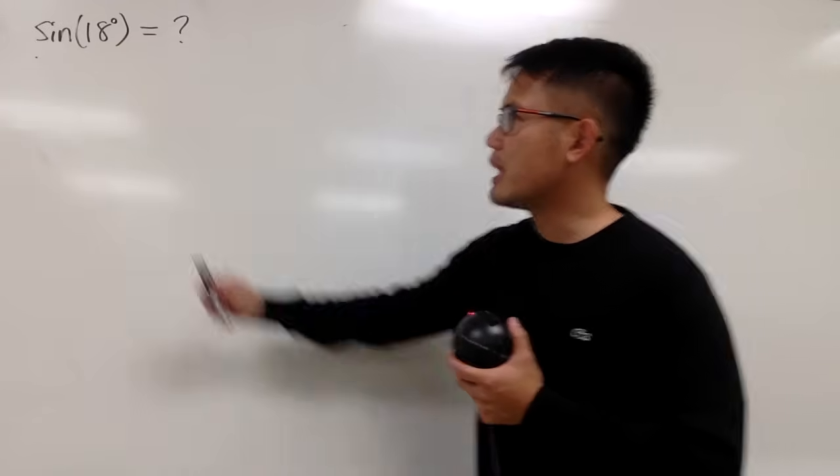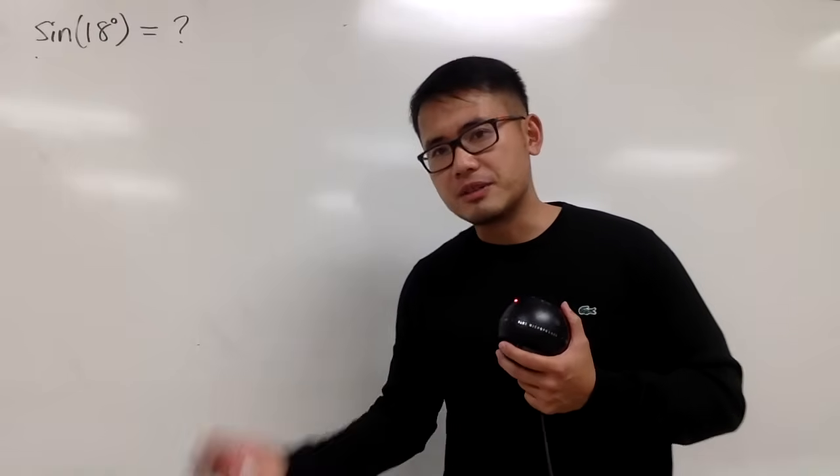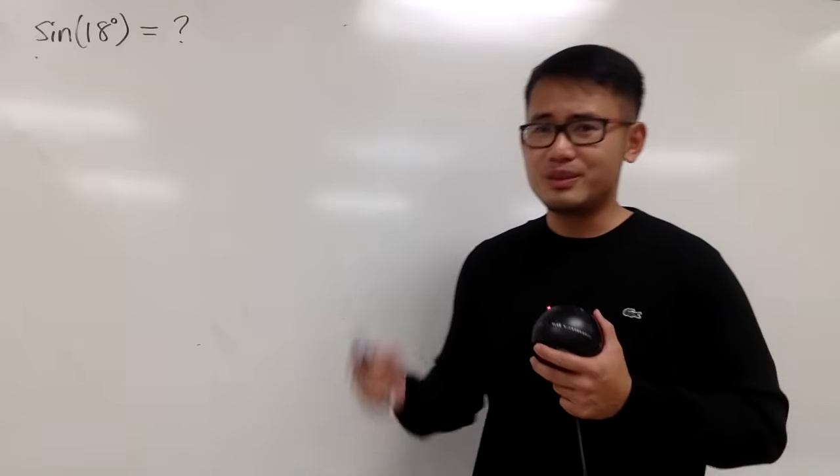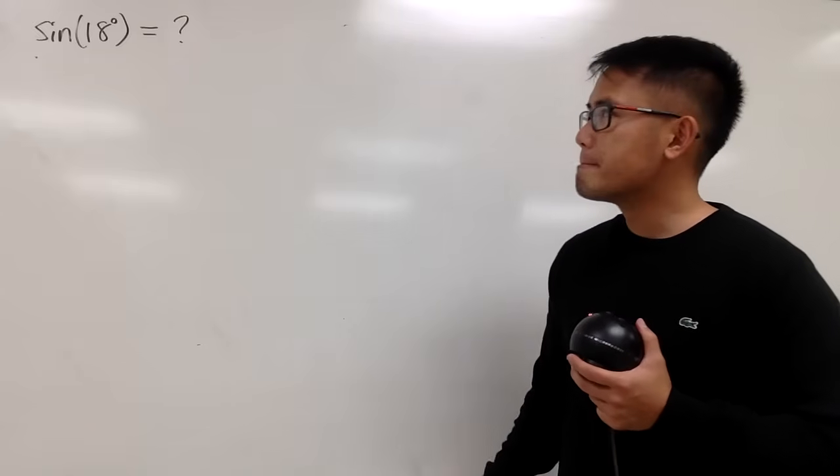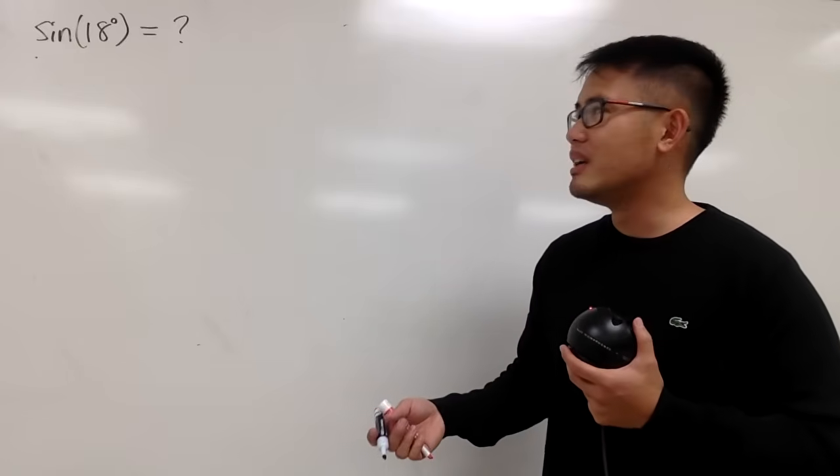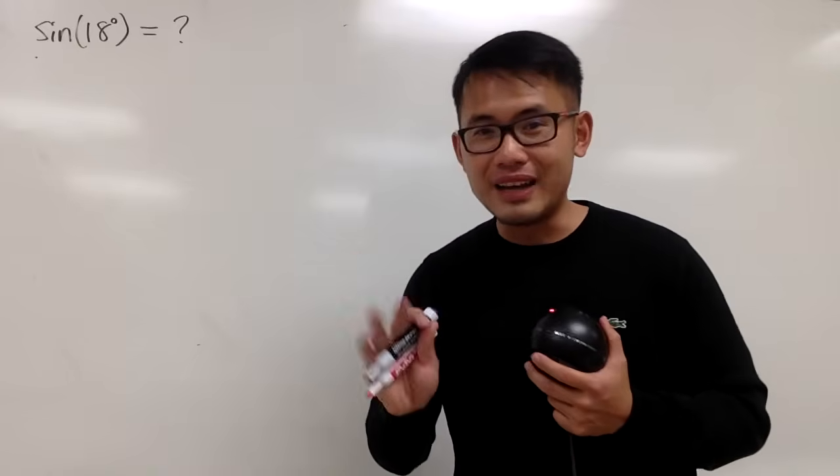And if you multiply this by 5, 18 degrees times 5 is 90 degrees, and sin of 90 degrees is really good, it's 1, right? So maybe we should use 5 and then multiply by 18.